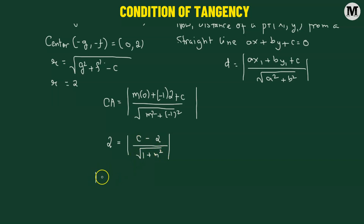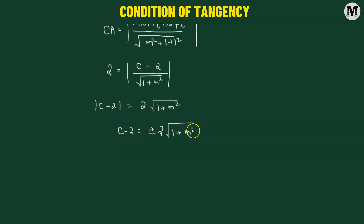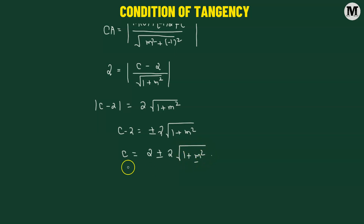Cross-multiplying gives the absolute value of c minus 2 equals 2 times the square root of 1 plus m squared. Removing the absolute value, we get c minus 2 equals plus or minus 2 times the square root of 1 plus m squared. Therefore, the value of c equals 2 plus or minus 2 times the square root of 1 plus m squared, which holds for any value of m.